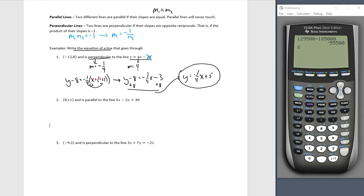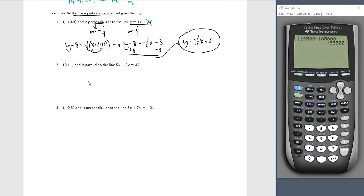Let's try example 2. Example 2, 8, 11. It goes through the point 8, 11 and is parallel to the line 5x minus 2y equals 30. My first step, I want to find m. So to find m, I'll subtract 5x from both sides. Then I'll divide everything by negative 2. And then I'll look, this is the slope of the given line. Because I want it parallel, I will use that same value, m equals 5 halves.